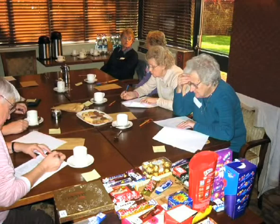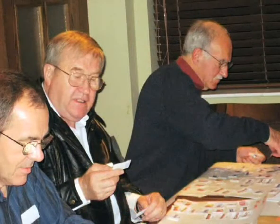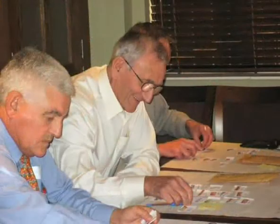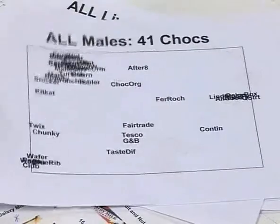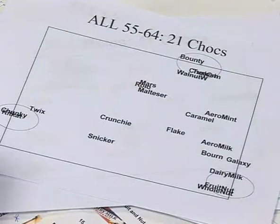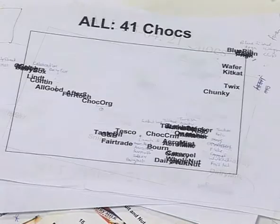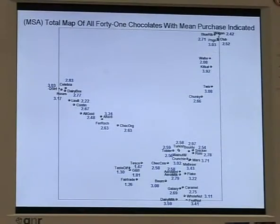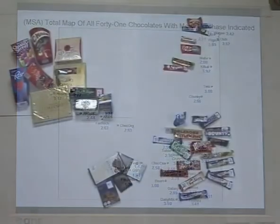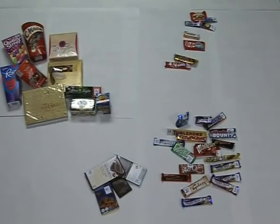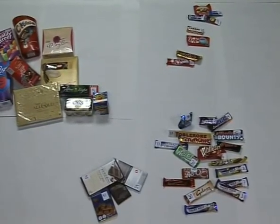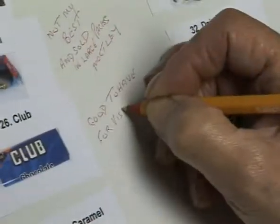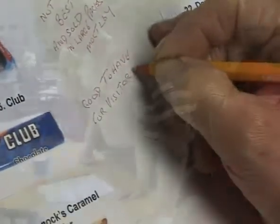We can do this with as many groups as we wish, of different kinds and different compositions. This gives us a range of ways of seeing the products. We can use a computer to combine these to get an overall map, and enrich our understanding of what this means from the group discussions and individual comments.